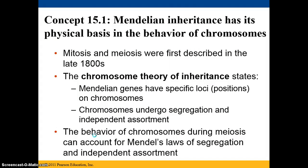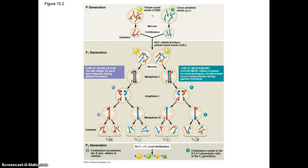Mendelian inheritance has its basis in the behavior of chromosomes. Mitosis and meiosis were first discovered or described in the late 1800s, and from that developed the chromosome theory of inheritance, which states that Mendelian genes have specific loci, or positions, located on chromosomes. The chromosomes then undergo segregation, or separation, and independent assortment, meaning they segregate independently of each other.